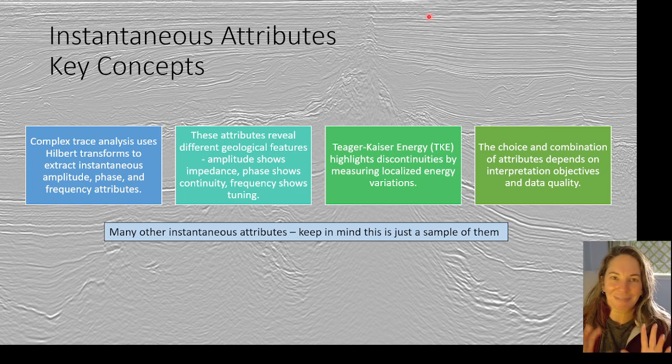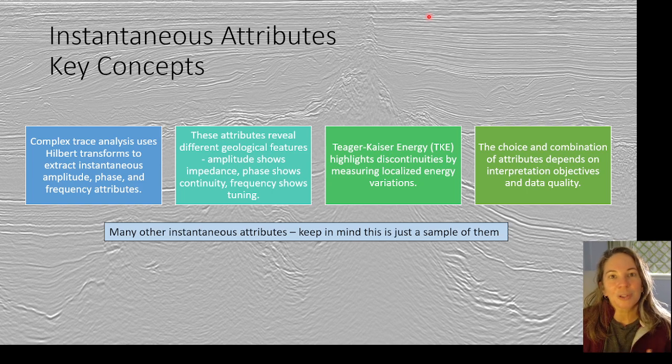And so to summarize, I'm going to summarize. Complex trace analysis are those that use the Hilbert transform. So the imaginary part of the complex trace to extract instantaneous amplitude phase and frequency attributes. And so a lot of these are very useful.